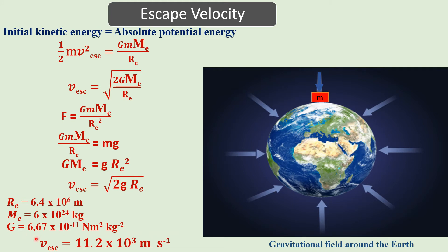Putting in all the values, the escape velocity for earth equals 11.2 × 10³ meters per second. For any other planet, we change the mass and radius according to that planet, and the escape velocity will be different.